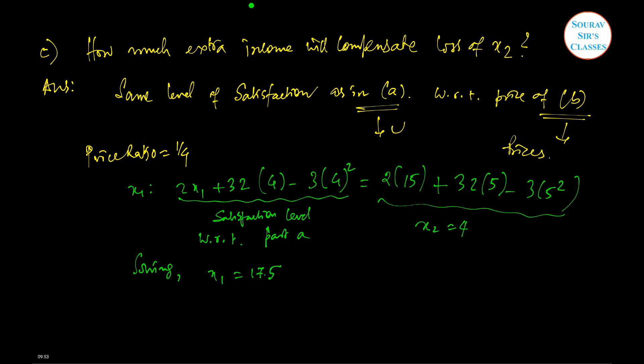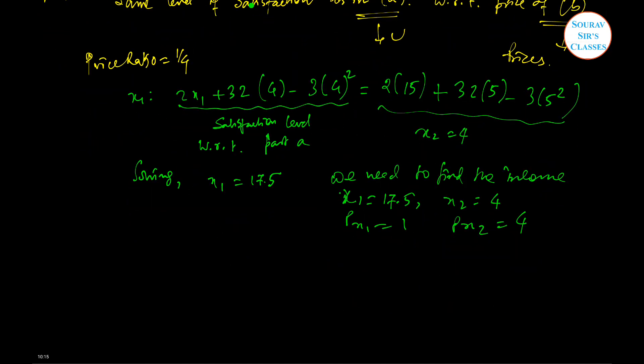Now we find the income needed to afford x1 equal to 17.5 and x2 equal to 4 at prices where price of x1 is 1 and price of x2 is 4. Total required income is 17.5 times 1 plus 16, so it is 33.5.